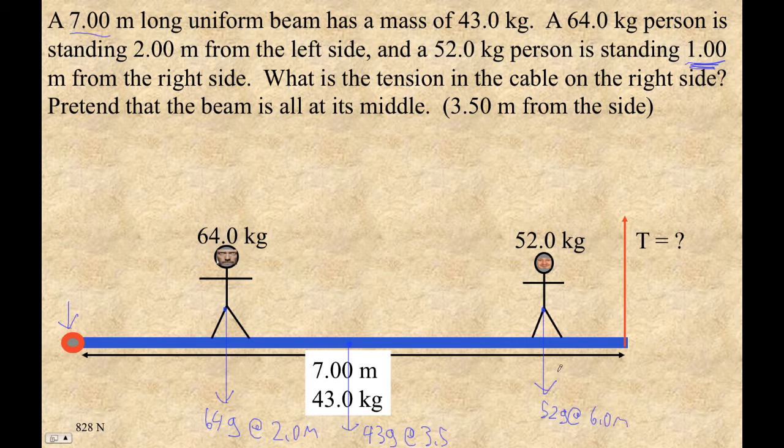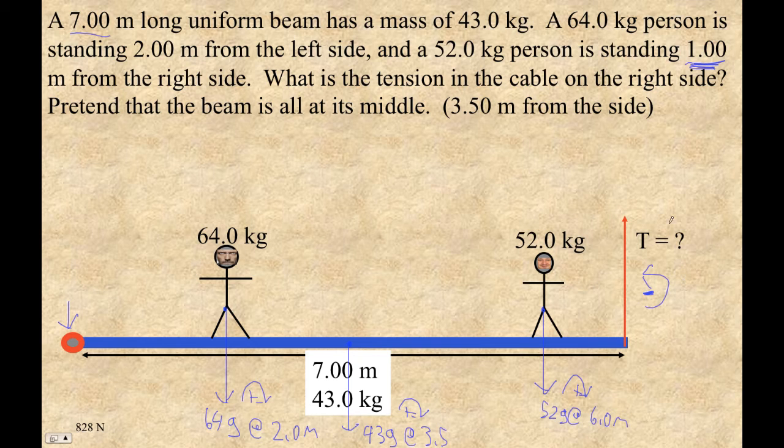And then this will be, these are clockwise, that's positive, this is clockwise, so it's positive, clockwise, so it's positive, and then this tension is going to cause an anti-clockwise torque. And then this tension is at 7 meters.